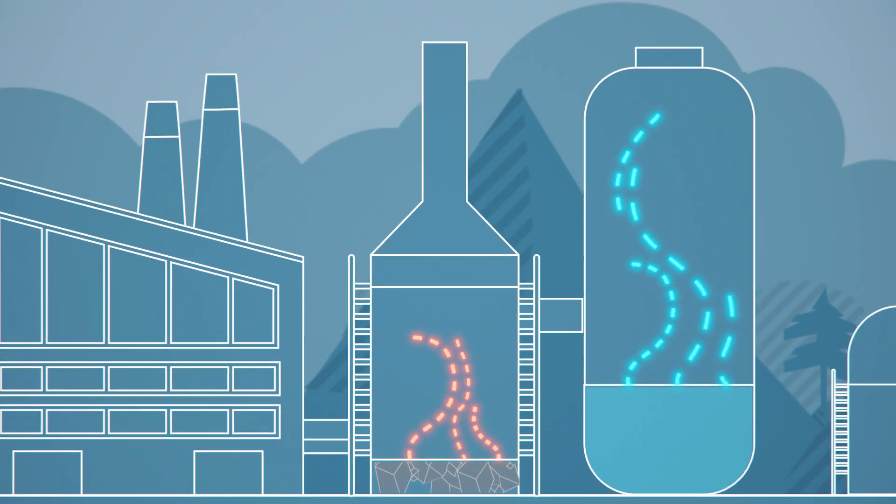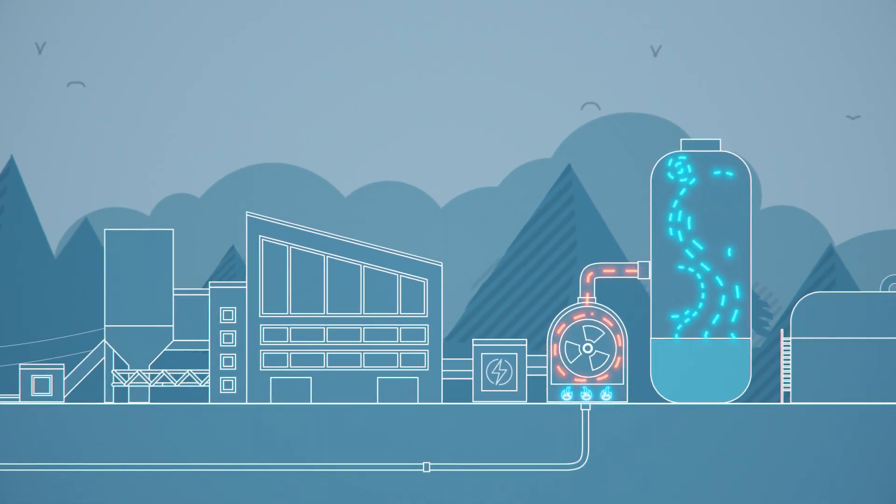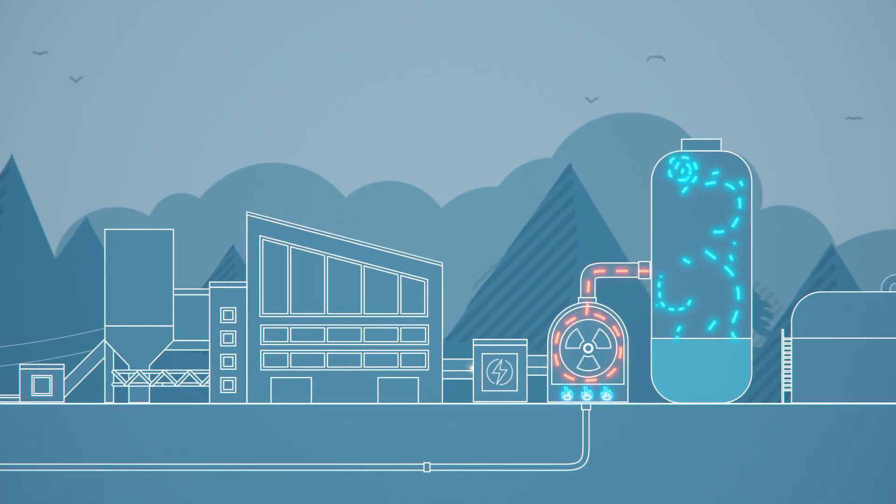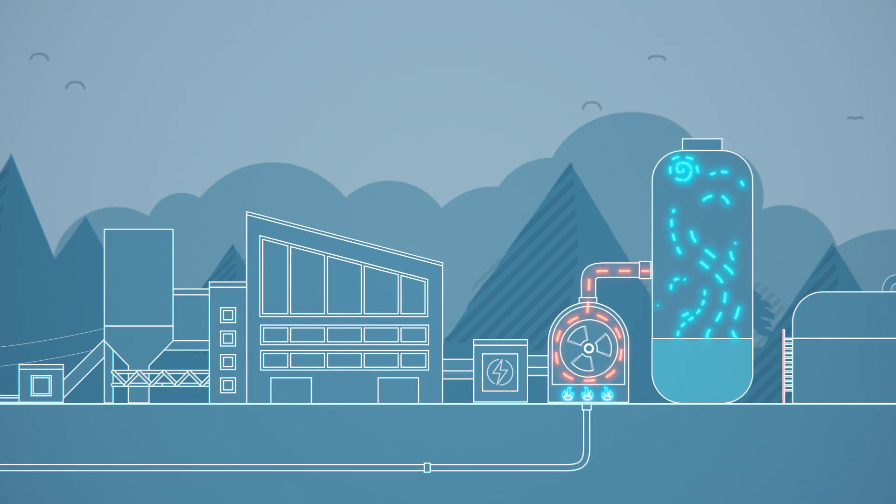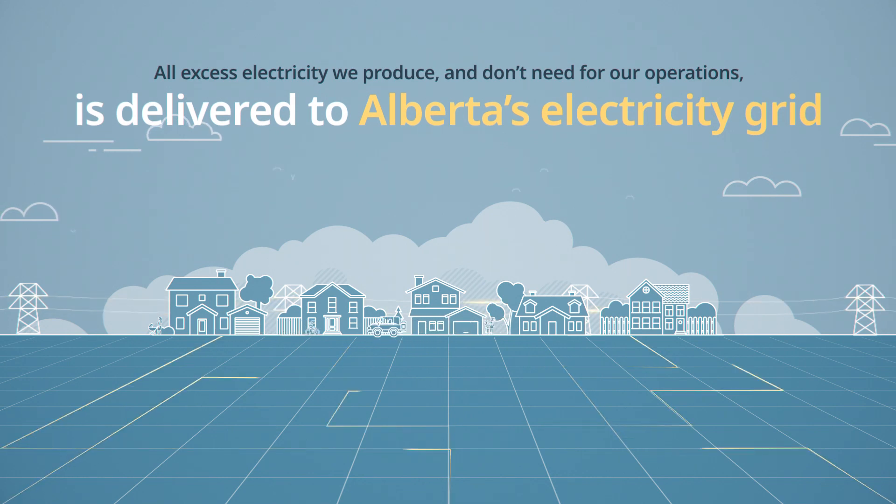Natural gas is a low GHG-emitting fuel source, and the cogeneration process effectively uses waste heat rather than releasing it into the atmosphere. All excess electricity we produce and don't need for our operations is delivered to Alberta's electricity grid.